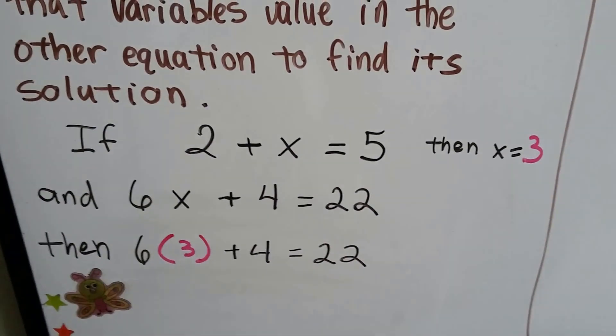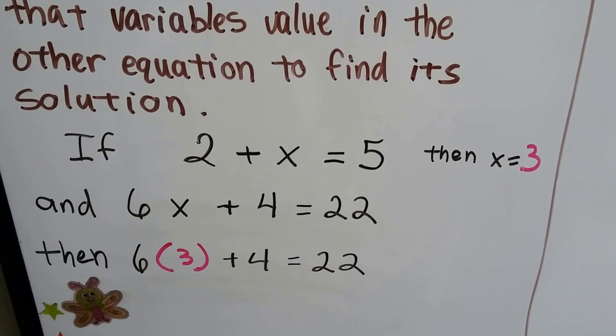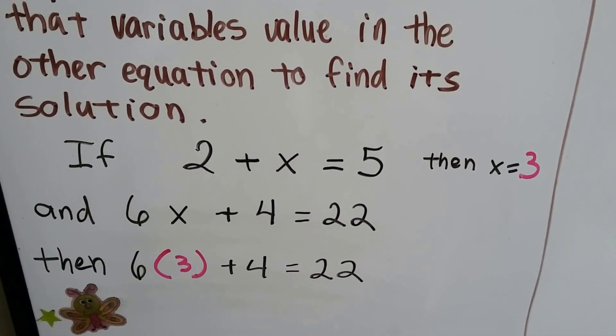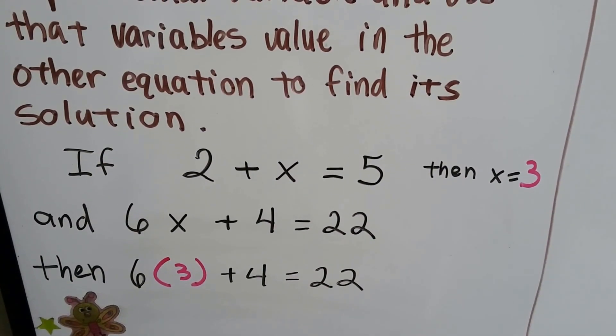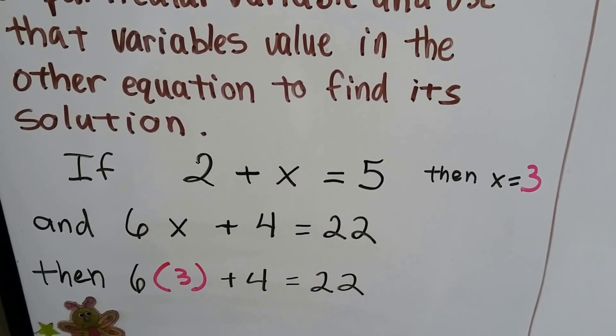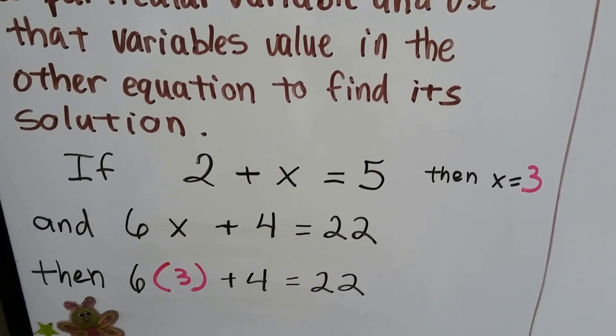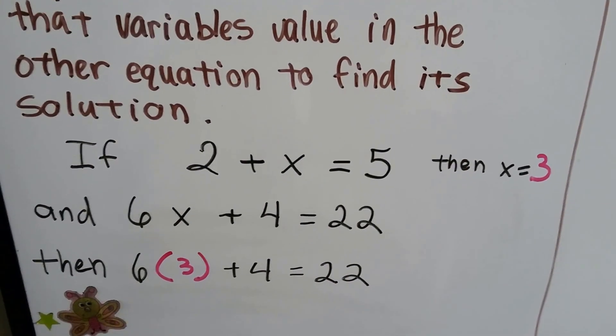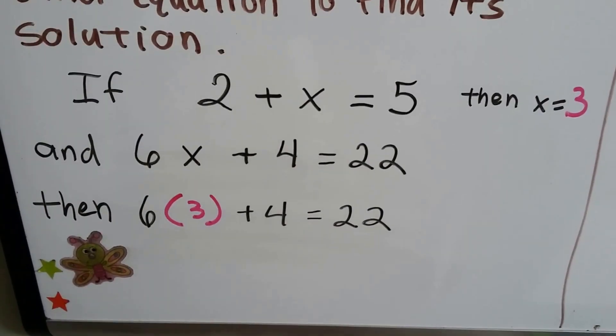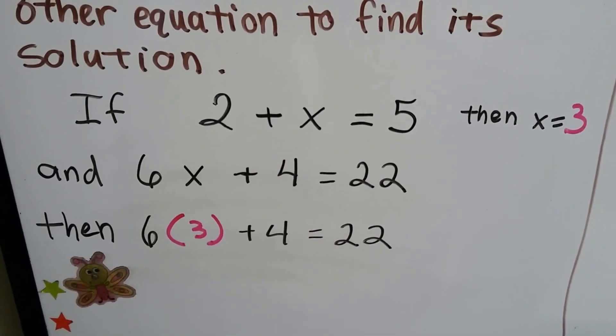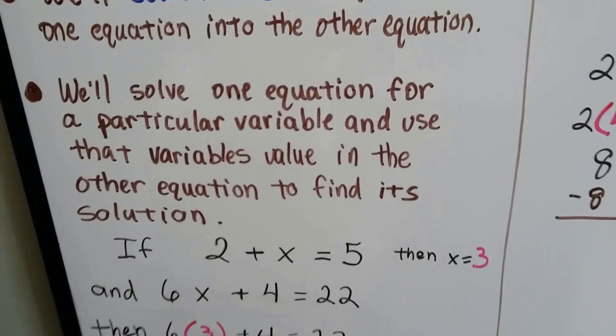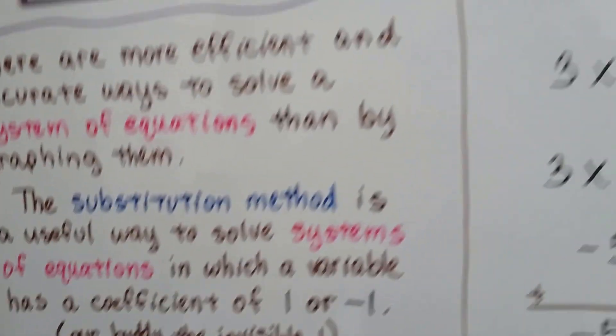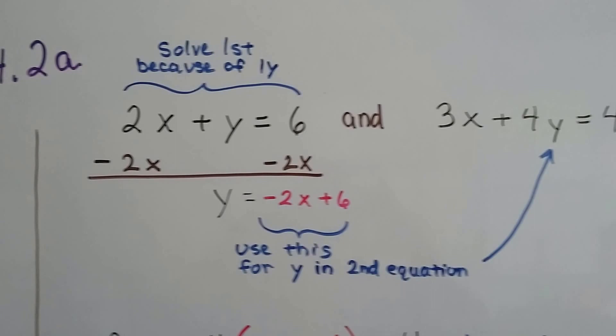So if we have two equations, 2 plus x equals 5, and 6x plus 4 equals 22, we solve the first equation, 2 plus x equals 5, and find that x equals 3, and we plug that 3 in for the x in the second equation. See? That's all. We're going to do this with two variables, an x and a y. It doesn't matter if it's a p or a q or an a or a b, alright?